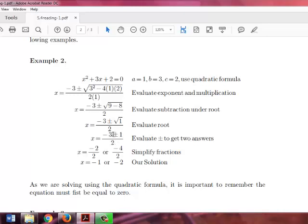The plus or minus here is how we get our two different solutions. They are (-3 + 1) divided by 2 or (-3 - 1) divided by 2.